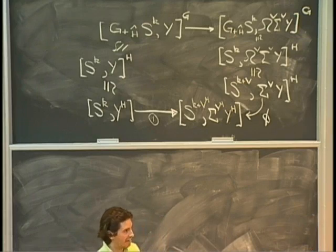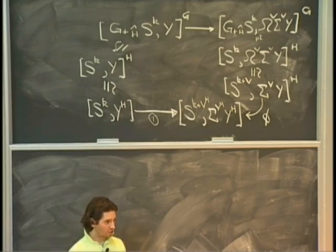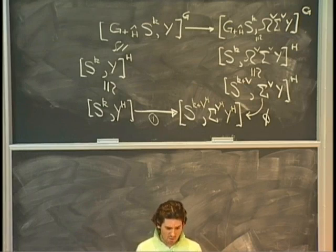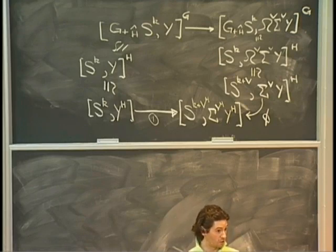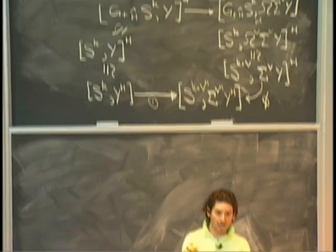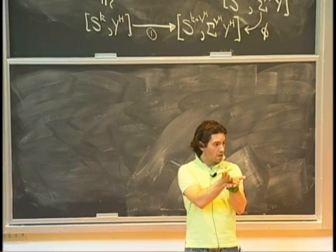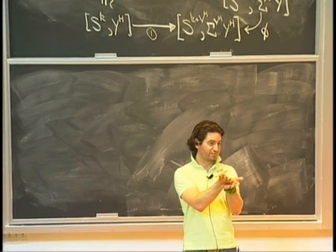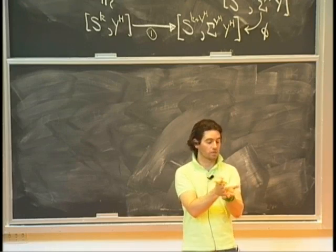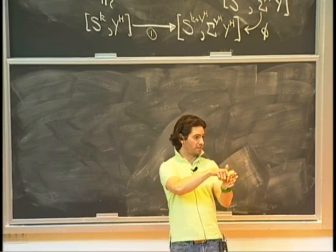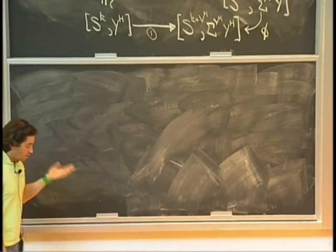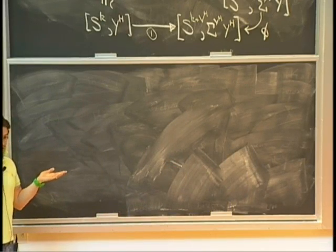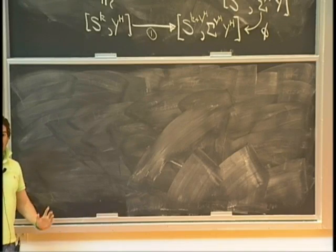You actually knew that. If you think back to Hatcher, when he starts talking about the suspension, the Cartesian product of two spaces has cohomology that looks like the tensor product of the cohomologies of the two things — I'm working over a field. The inclusion of the wedge into the Cartesian product induces, in homology, exactly the inclusion of those two tensor factors inside the tensor product. Stably, so after I suspend once, the Cartesian product splits as the wedge of the two suspensions together with the suspension of the smash product of the two things.